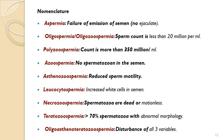Azoospermia is a condition where no spermatozoa are seen in the semen. It may be obstructive or non-obstructive. Obstructive causes include infection in the epididymal system or vas deferens, cystic fibrosis, trauma to the reproductive area, or hernia surgery. Non-obstructive reasons for total azoospermia include karyotype abnormalities, exposure to radiation, or cytotoxic drug administration.